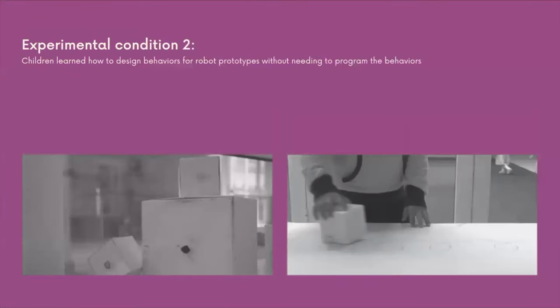Children included in the second experimental condition were instructed to think about different personalities for the robot without needing to program the robot. Children produced movements for the robot using a low fidelity robot prototype in the form of a cube. They worked in small groups of three to four and were responsible for producing the movement for each personality trait of the robot together.